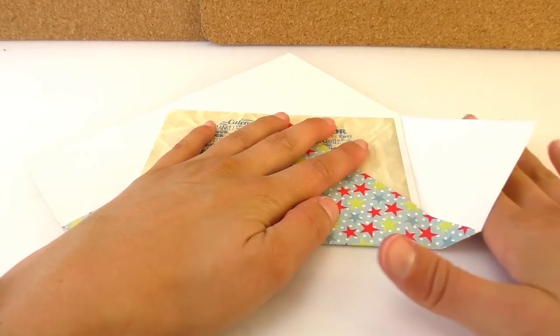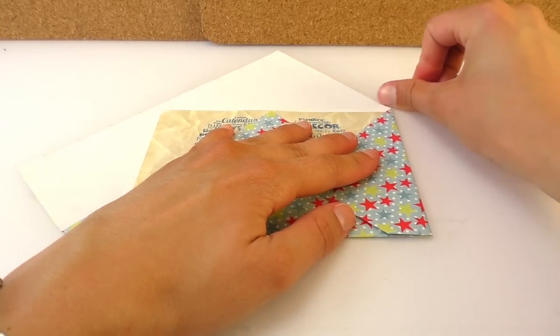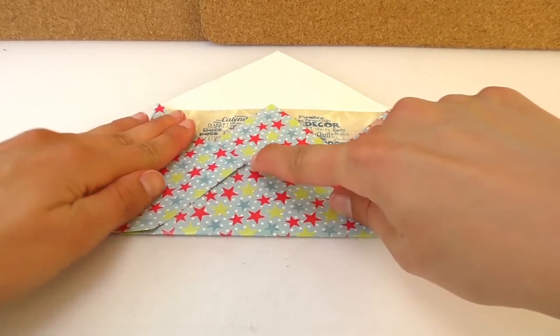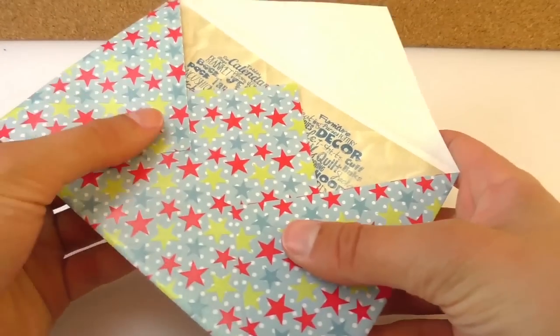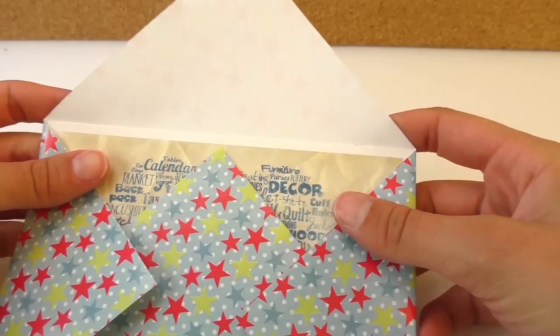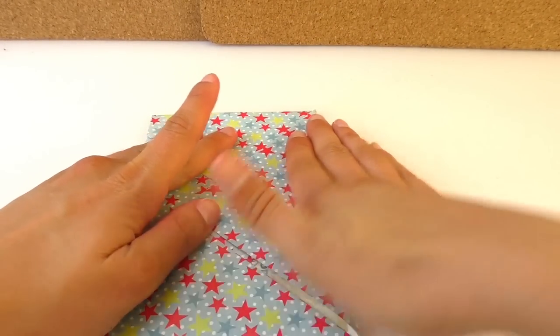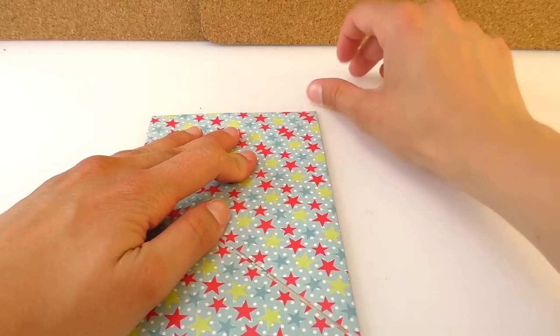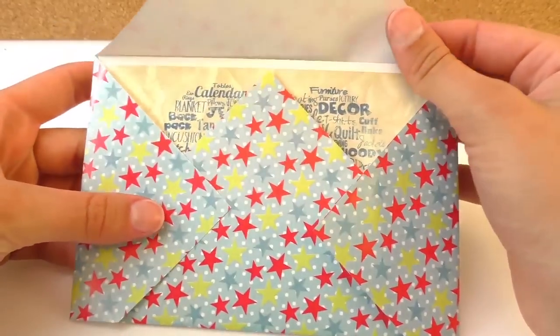Then we're going to grab the right side and we're going to fold it like this, touching the edge of the postcard as well. And we're going to do the same one with the left side. Now our envelope is taking shape. Super cool. And finally we're going to grab the top part of the paper and we're going to fold it down like this. There we go. And we have this really cool envelope.